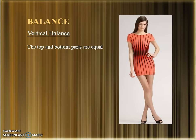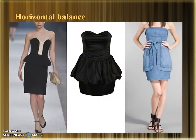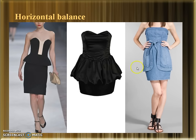Vertical Balance is a part of Formal Balance in which the top and the bottom parts are equal. Horizontal Balance is a balance in which the left and the right parts are equal. If you draw a line, the left and the right sides of the dresses are similar, giving an appearance of Formal Balance.